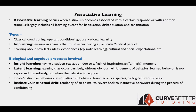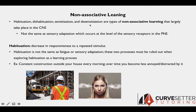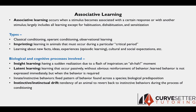Associative learning is generally when a stimulus becomes associated with a certain response or with another stimulus — basically all learning that isn't non-associative learning. The main types include classical conditioning, operant conditioning, and observational learning, all of which we'll discuss extensively today. There's also imprinting: learning in animals that must happen during a certain critical period, such as ducks following their mother.